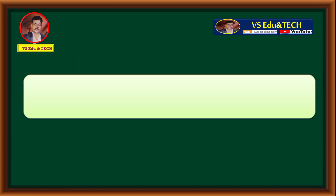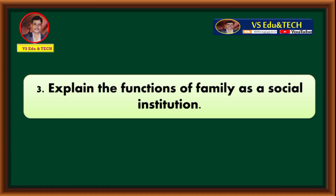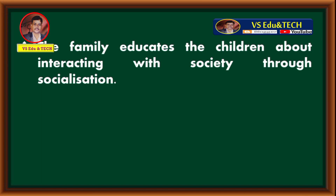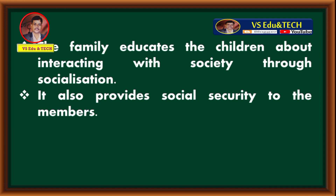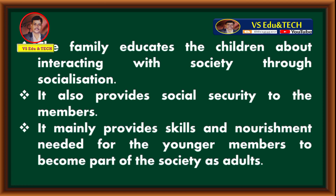Question number three: explain the functions of family as a social institution. The family educates the children about interacting with society through socialization. It also provides social security to the members. It mainly provides the skills and nourishment needed for younger members to become part of society as adults.